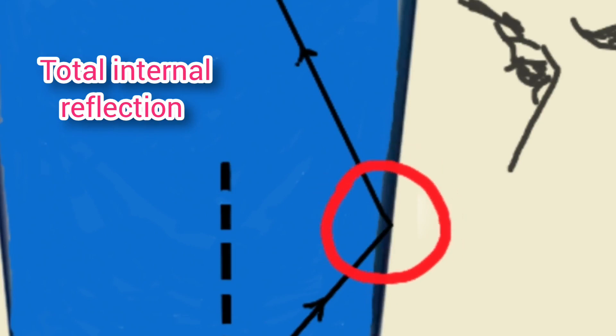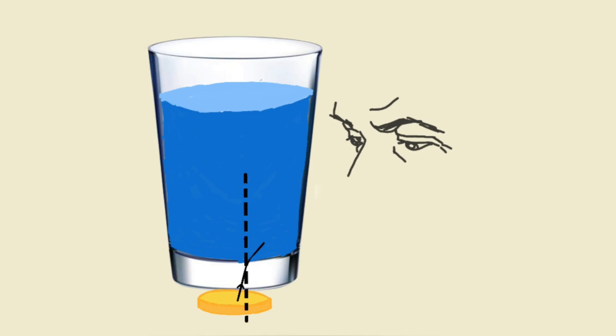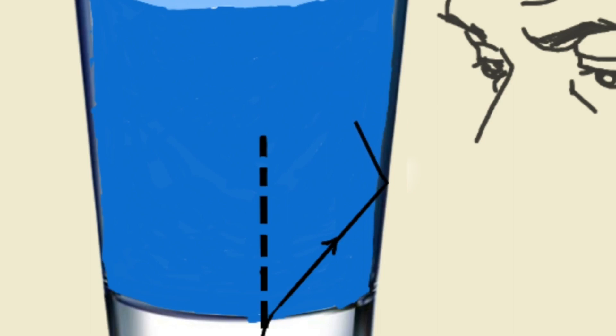Total internal reflection is the reason behind the disappearing of the coin. The ray of light from the coin travels through the water, gets reflected again into water at the sides of the tumbler.